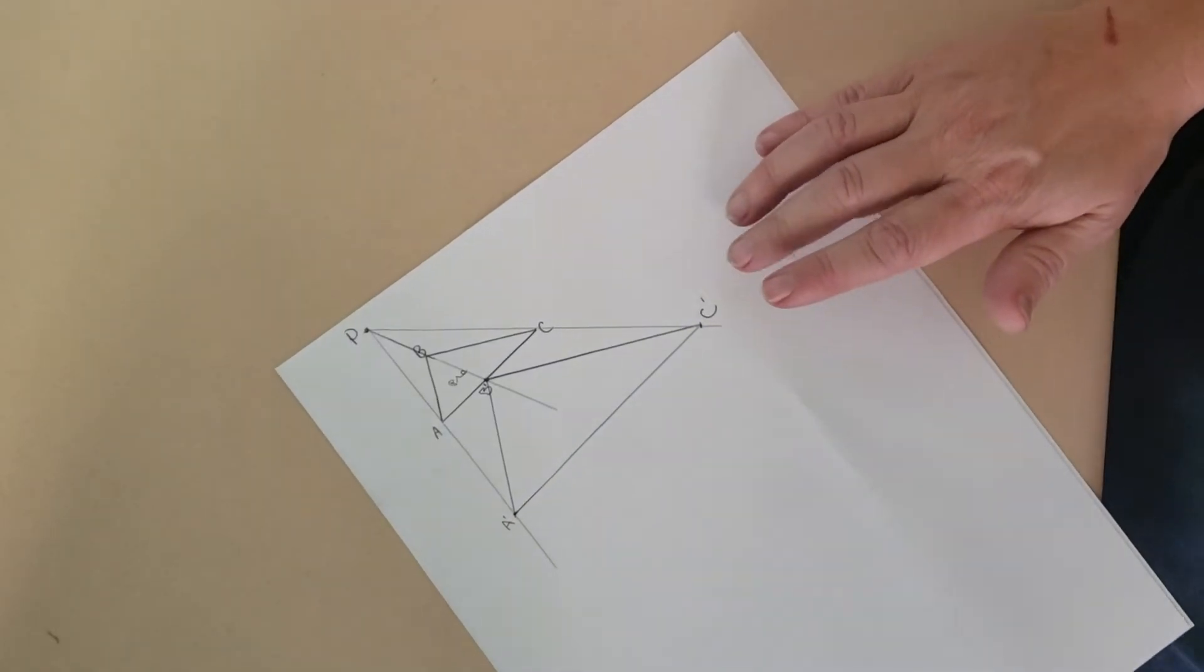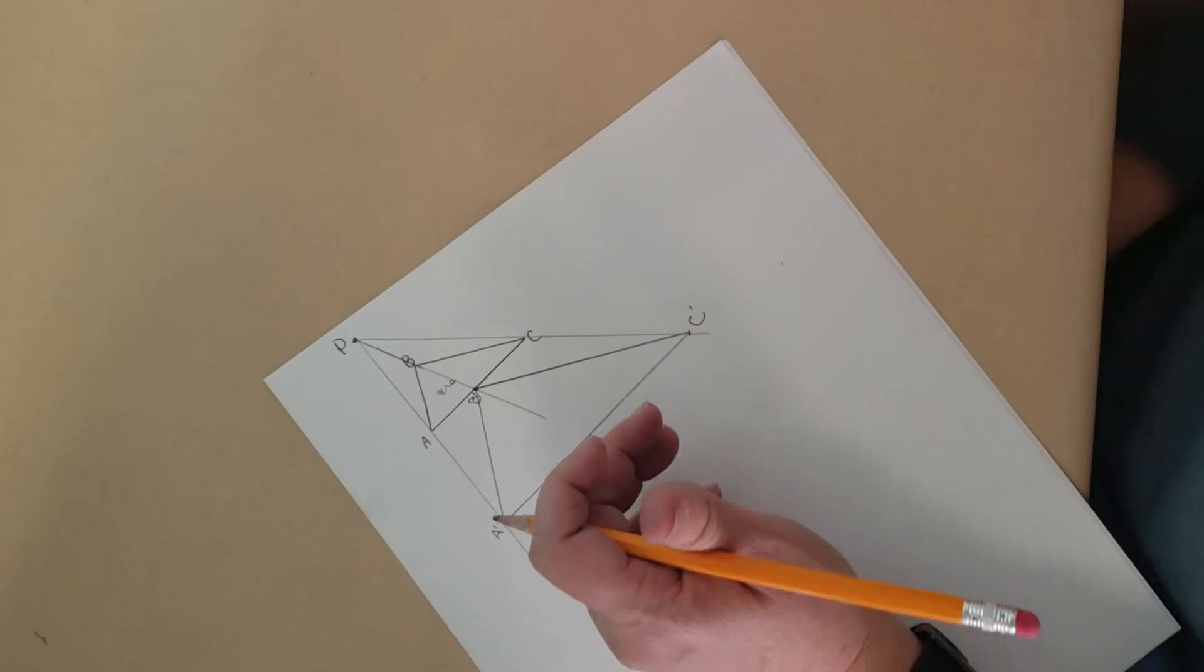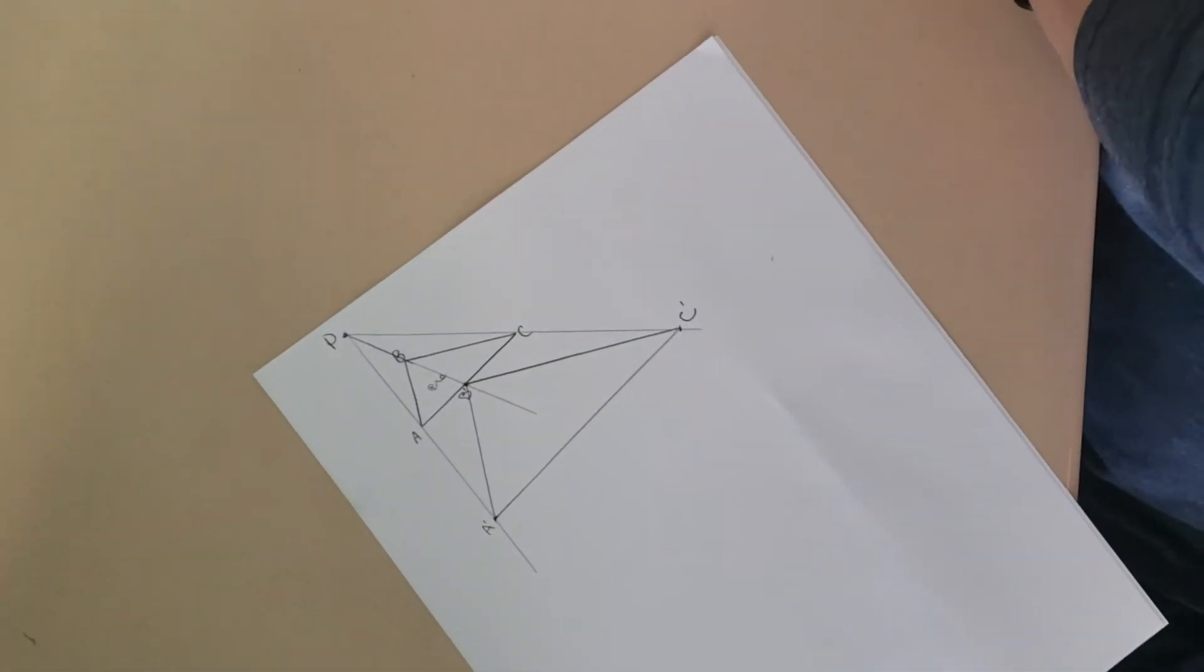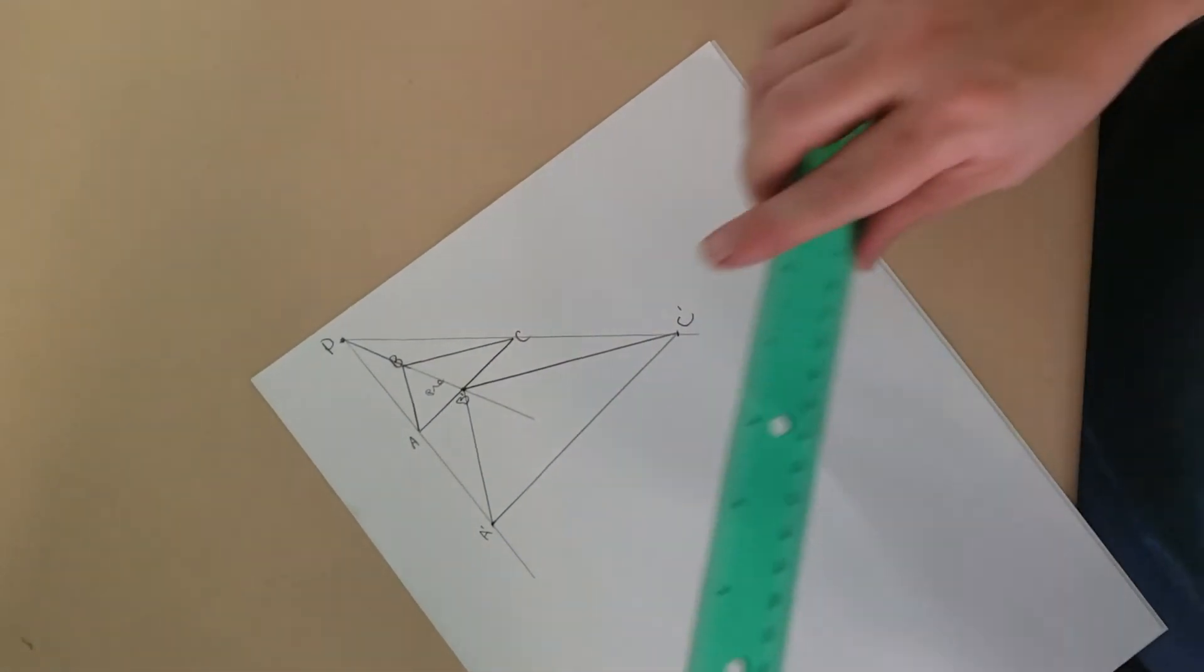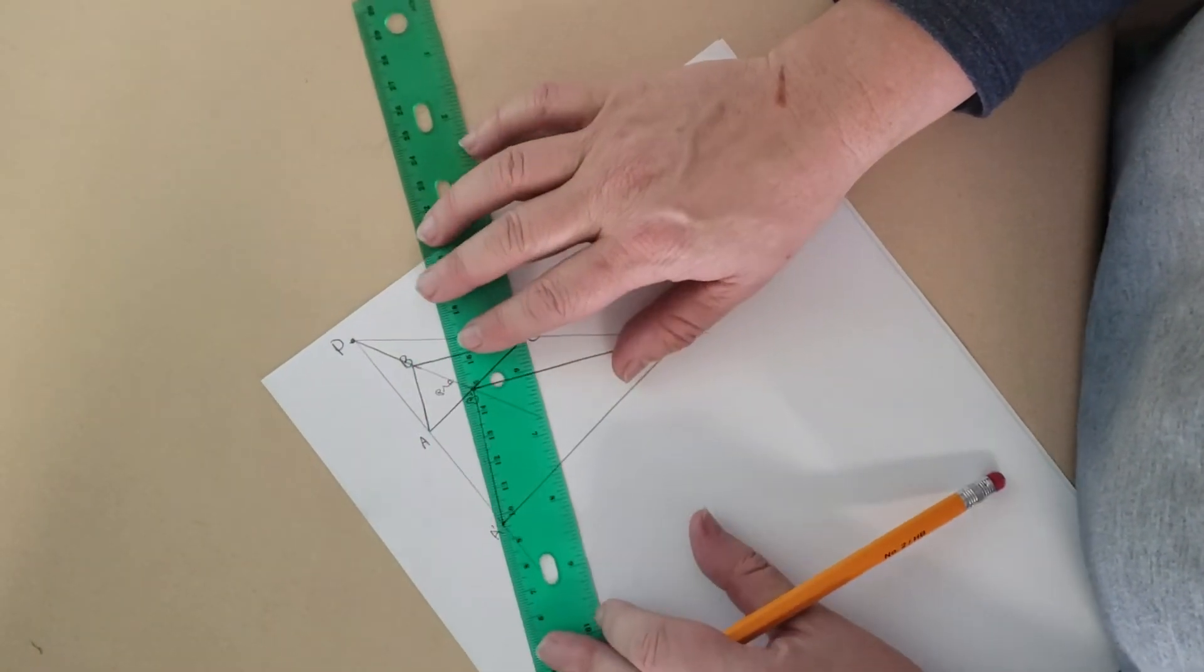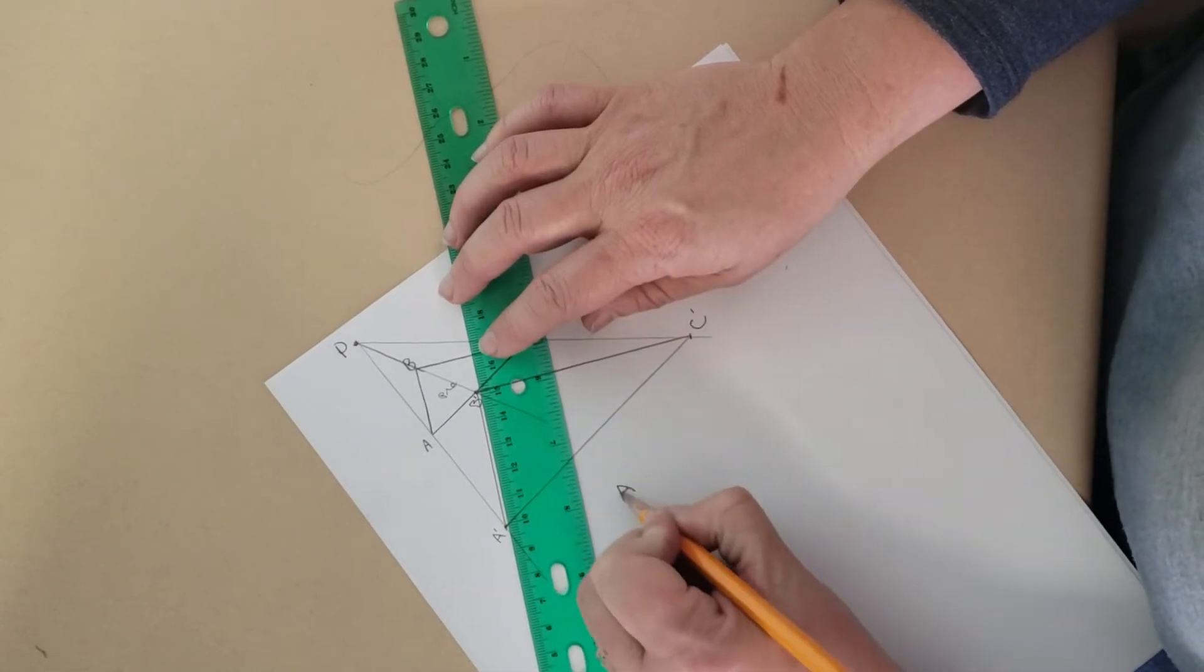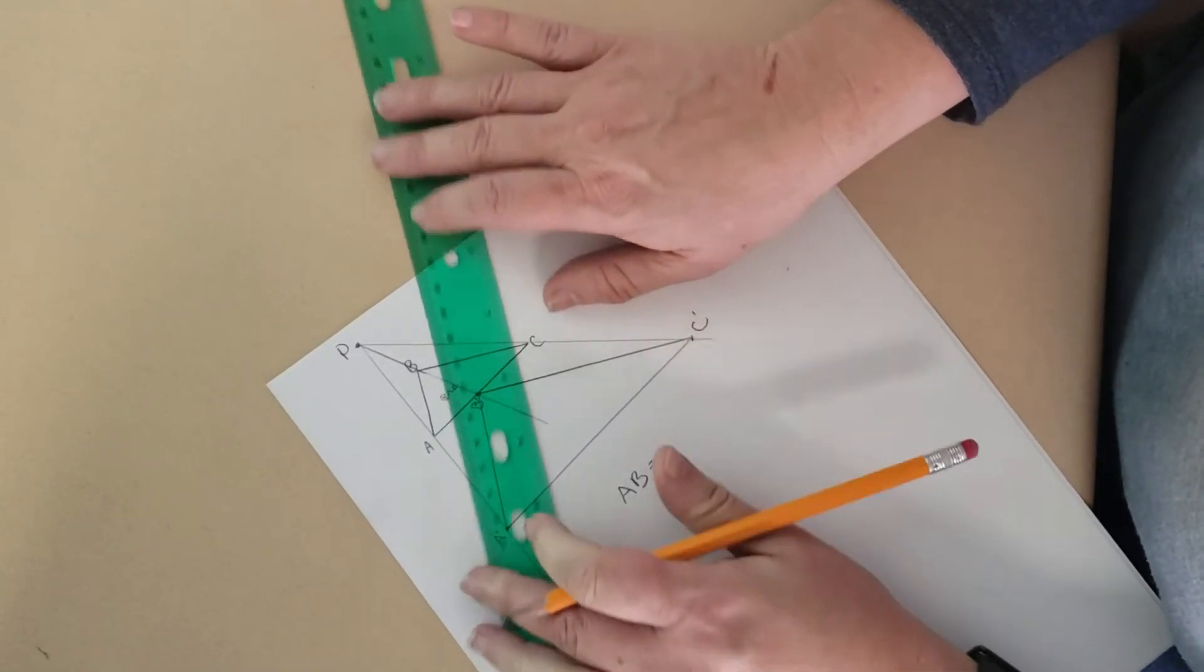Now I do want to measure all the sides. But in order to keep the video short I'm going to show you a pair of corresponding sides. So this side AB has a relationship with this side A prime B prime. And it becomes very clear when I actually measure it. So I'm going to write down AB and let's see what it measures.